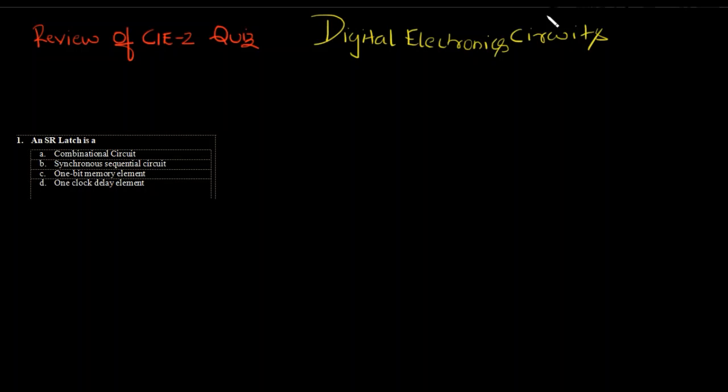Hi, today we will be reviewing the CI2 quiz paper for digital electronics circuits. It was a paper which was very moderate to high level. Let's see how to solve all the questions. The first question was fairly simple.